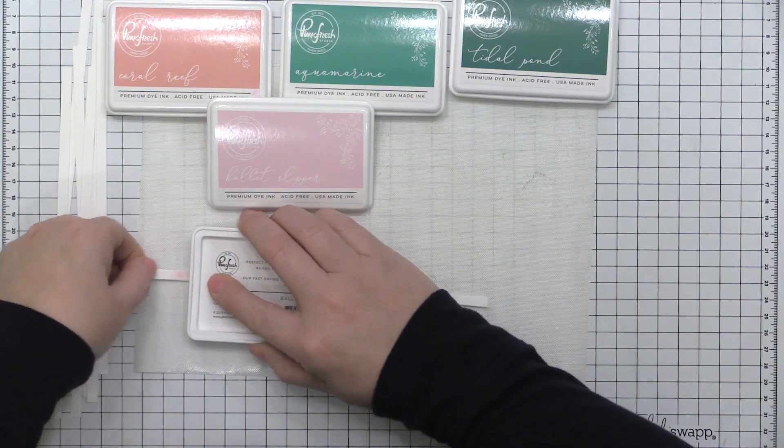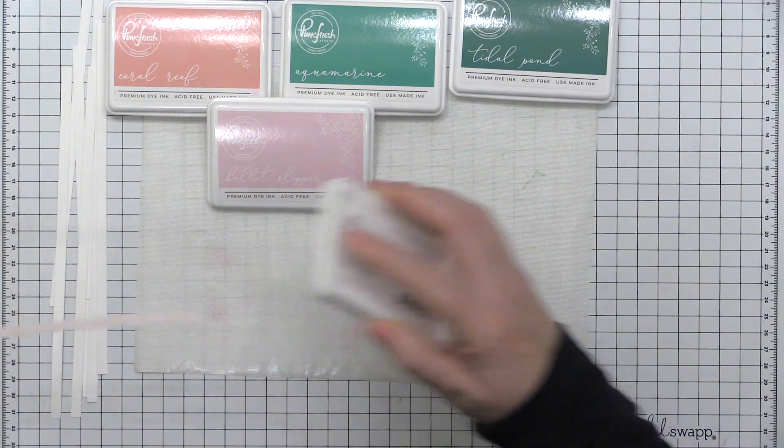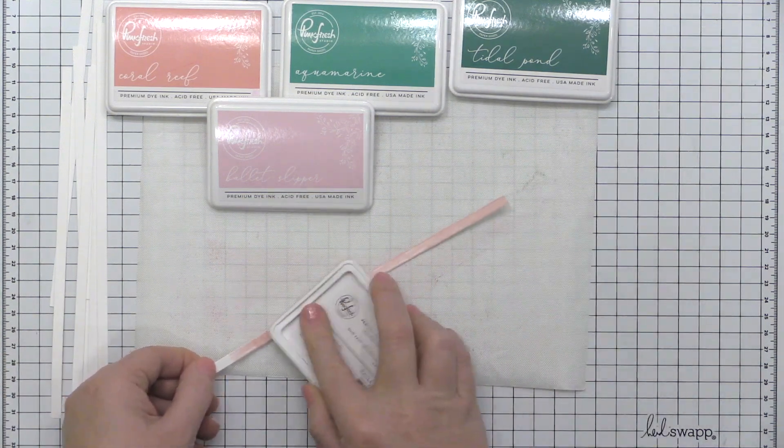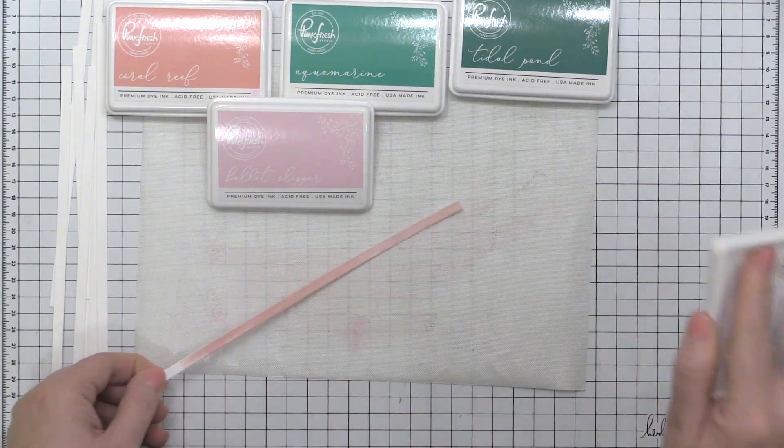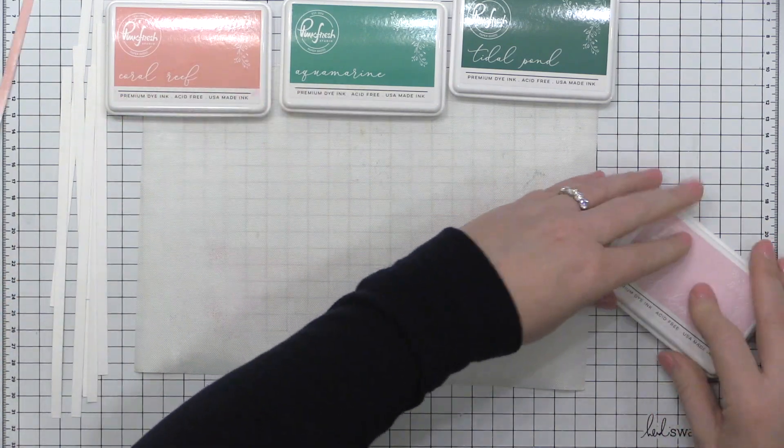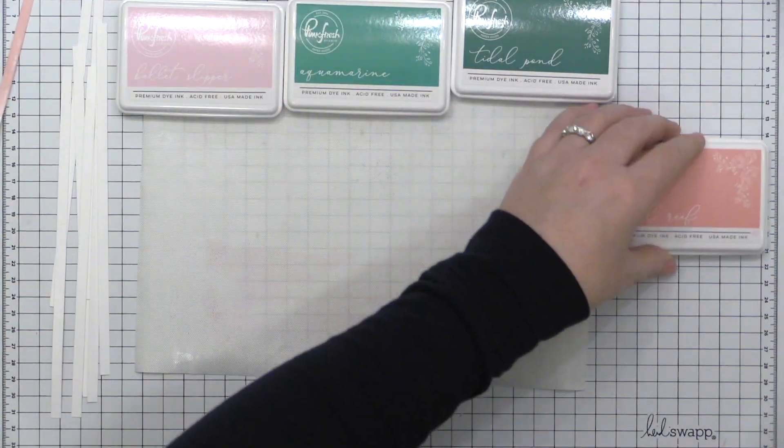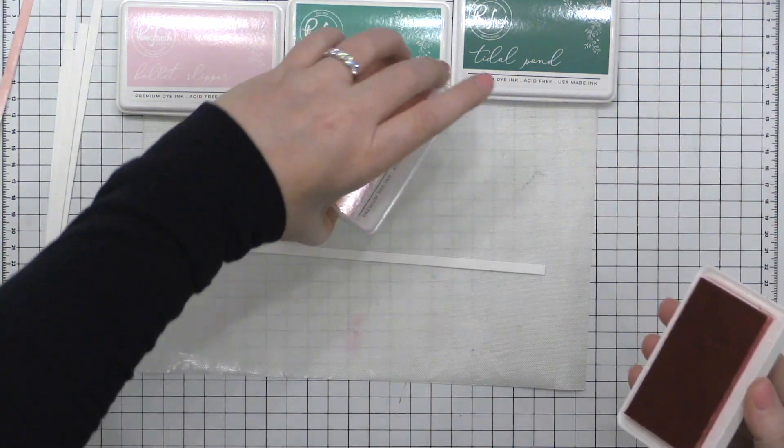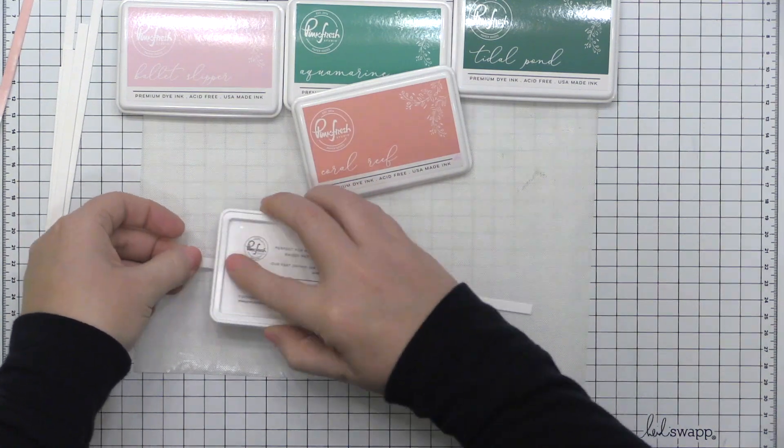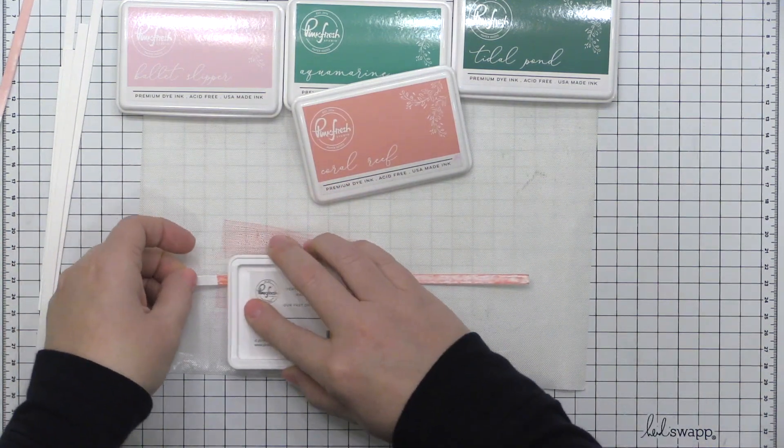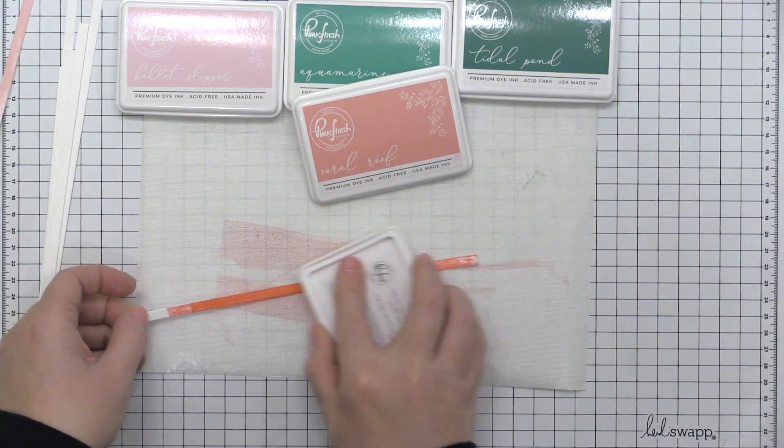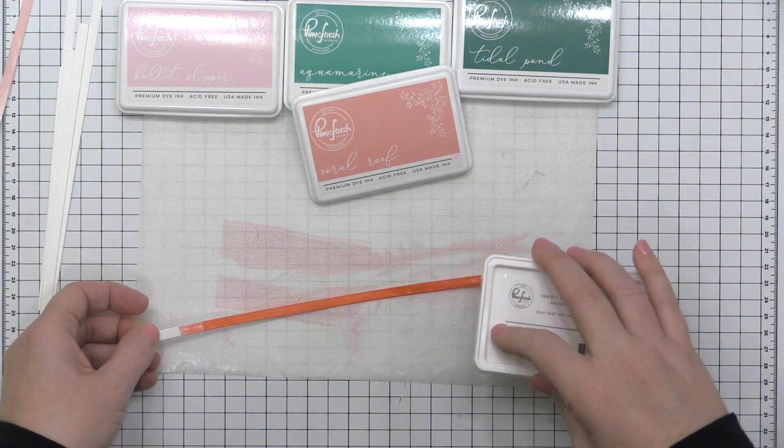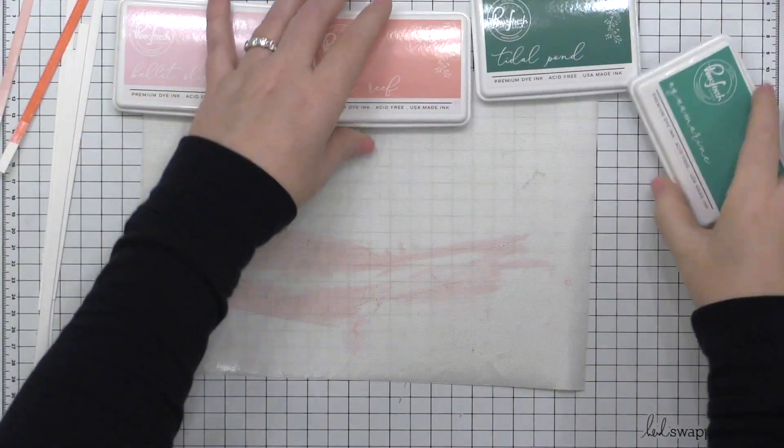Now I'm taking my first strip and I am protecting my surface with an easy clean craft mat and I am taking my ballet slipper ink pad and just running it over the surface of this strip to add color. Now when you do this direct to paper technique you may notice that your ink looks a little splotchy on this white cardstock. There might be some areas that don't look completely filled in or as solid as the rest of the areas but that's okay because this ink is going to absorb into the paper and it's going to dry back and smooth out so you don't have to make sure that every little inch is covered perfectly.